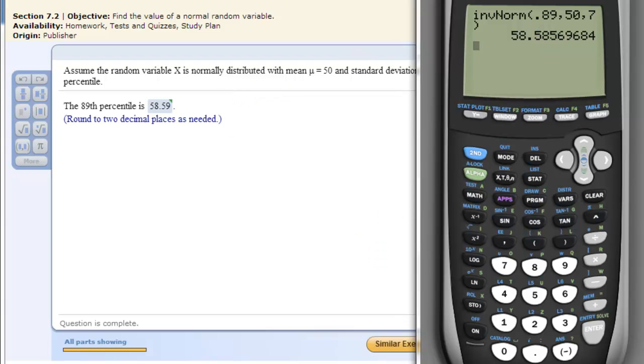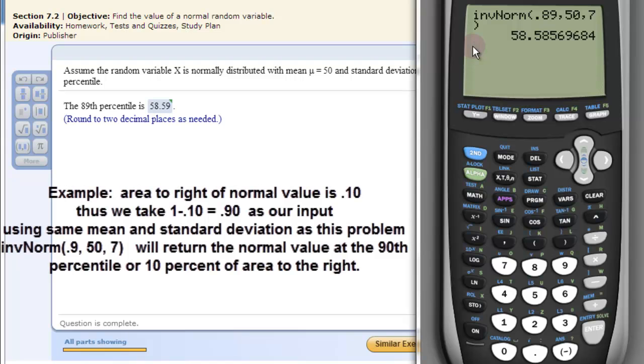This function on the calculator always returns the normal value given an input that's to the left. If you're given an area to the right, you have to convert it by taking 1 and subtracting that to get an area to the left before you put it in.